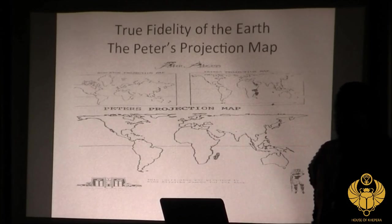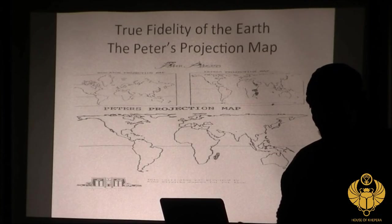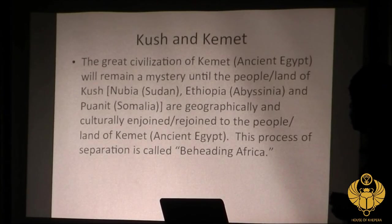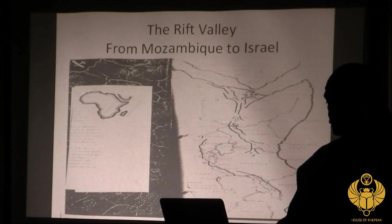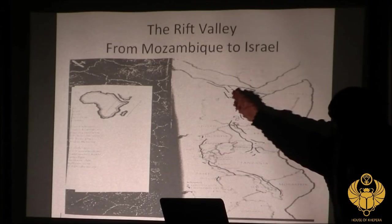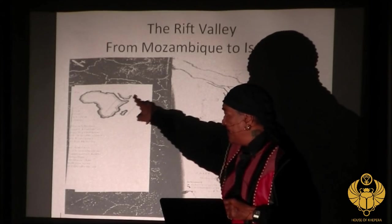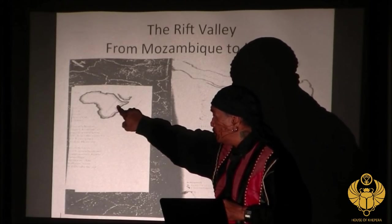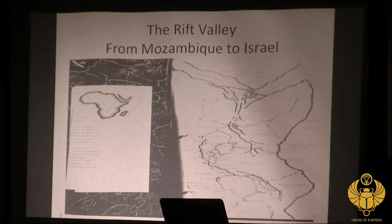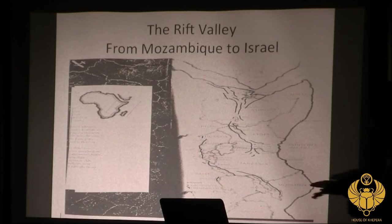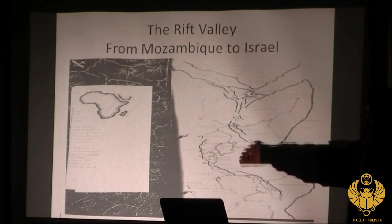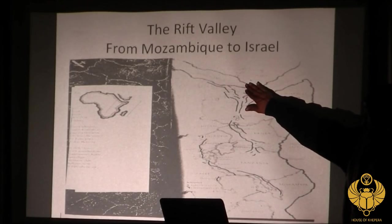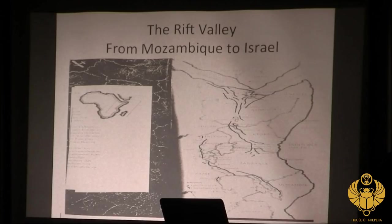The Peters projection actually shows that Africa is much larger relative to its actual size. When we deal with Kush and Kemet, we're dealing with this section of Africa here — it's called the Rift Valley. It starts in Mozambique, comes up through Tanzania, Kenya, Uganda, Sudan, goes into the Red Sea, and into what we today call Israel.